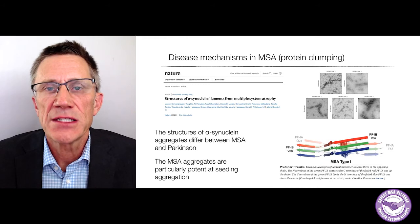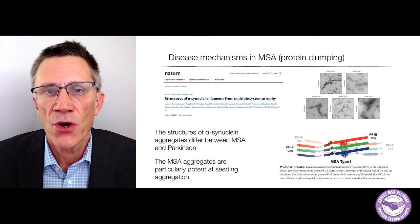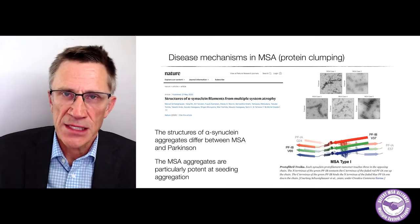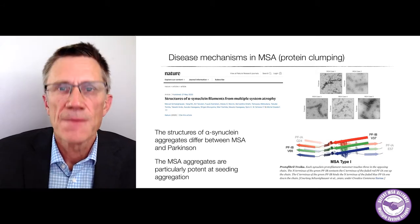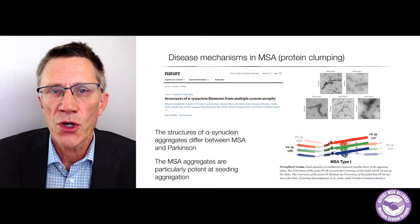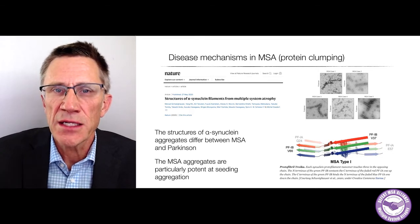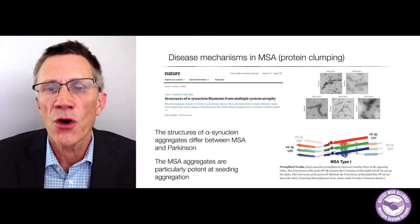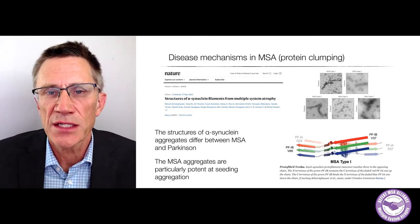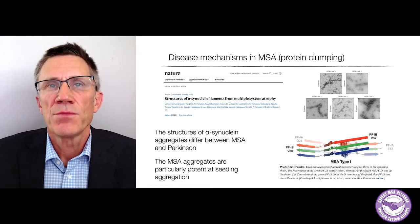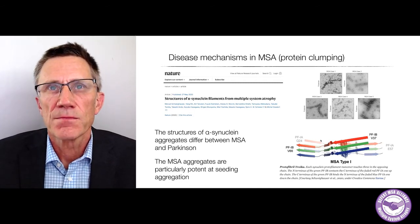The structures of alpha-synuclein aggregates are different in MSA compared to Parkinson's, and they're particularly prone to seeding. They prefer to form these aggregates in the oligodendrocytes — so something is fundamentally different from Parkinson's.